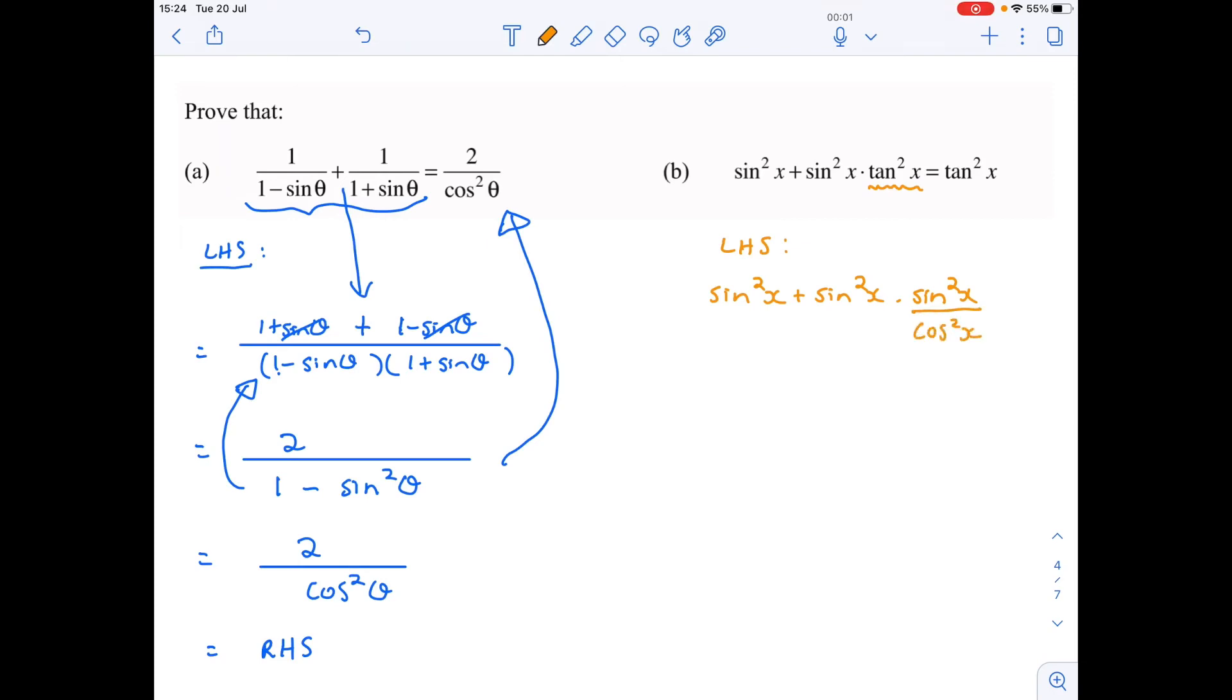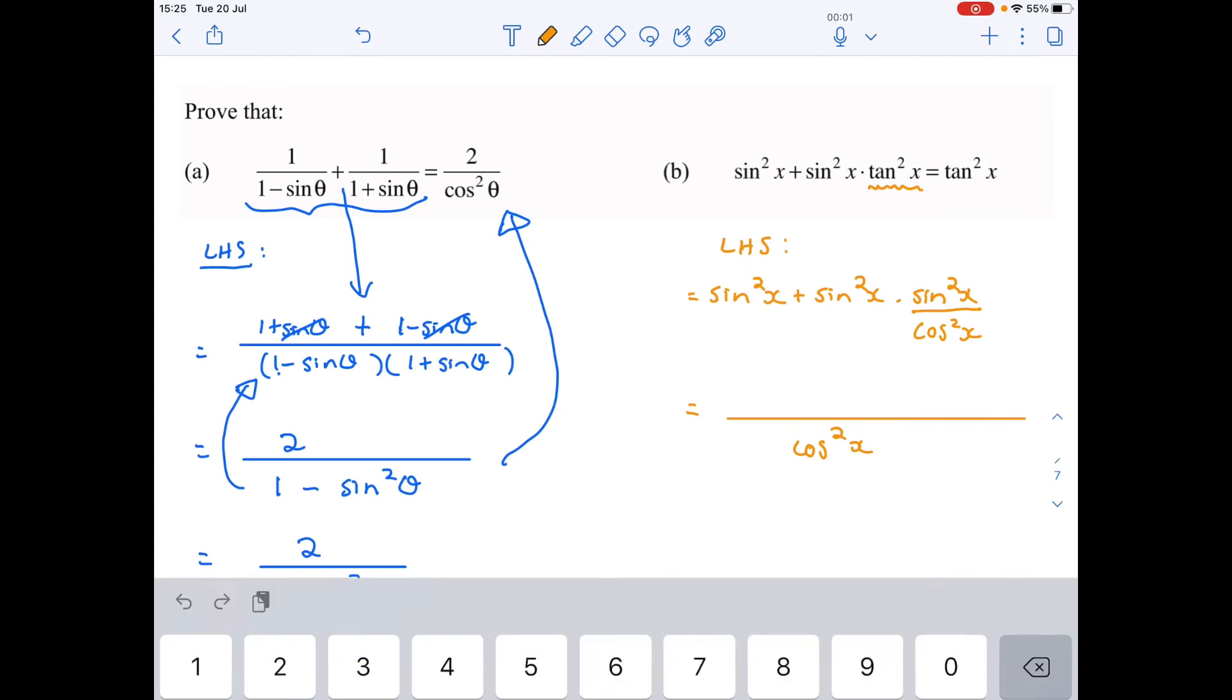I'm going to go sin squared x plus sin squared x times sin squared x over cos squared x. That's direct changing with one of my identities. And now you look at it. Once again, I've got a scenario where I've got two terms. This is one term, two terms. So I'm going to combine it with a common denominator, and my common denominator is going to be cos squared. So now this is going to be over 1.